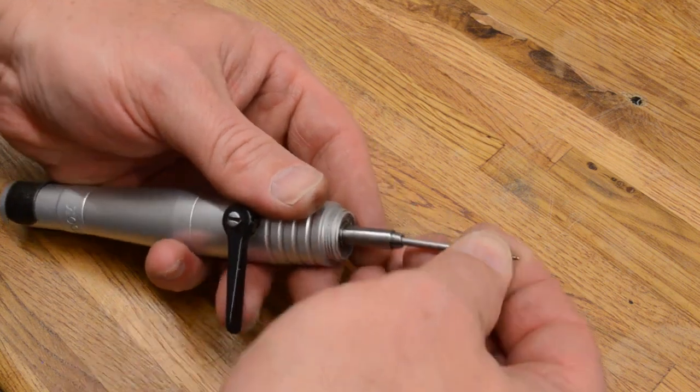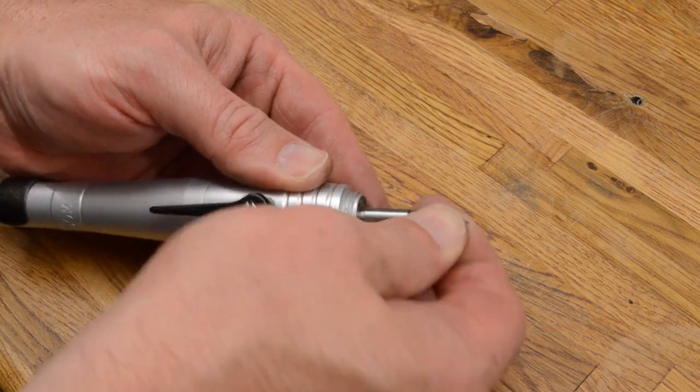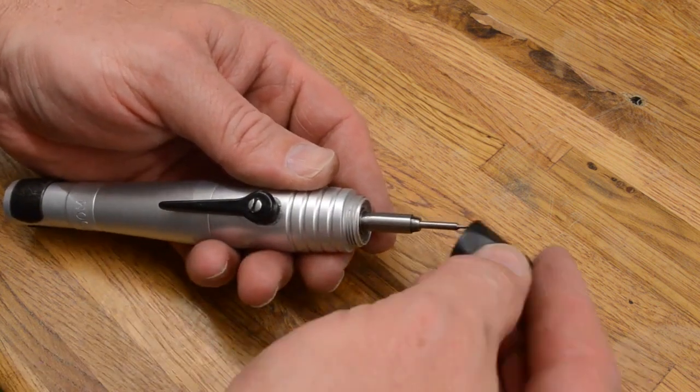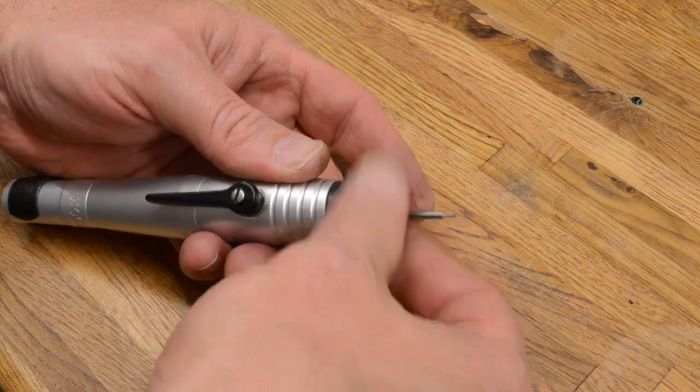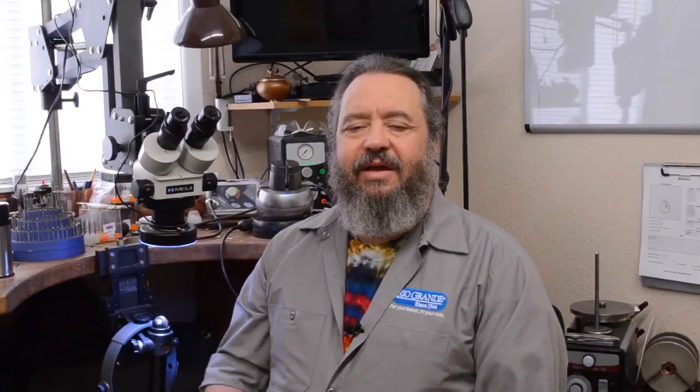Now test again, make sure your bit goes in, make sure it doesn't come out, and you're all set. Go ahead and put your cap back on, and you're ready to start using your H20 again. And that's how you adjust the collets on an H20 handpiece.